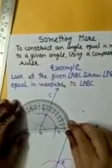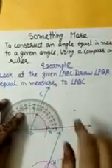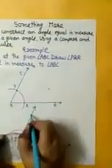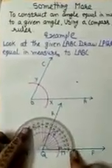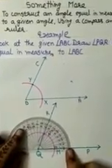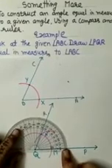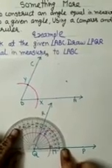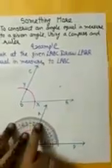Now, take protractor and measure angle ABC. If you look carefully, the measure of angle ABC is 65 degrees. Measure angle PQR. The measure of this angle is also 65 degrees.